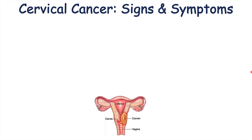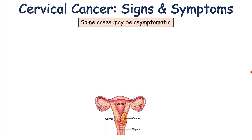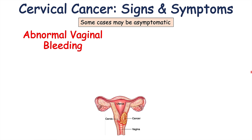Now let's talk about the signs and symptoms of cervical cancer. It's important to note that many cases are detected with screening methods like pap smear and colposcopy, so patients may have a very early stage of cervical cancer but be completely asymptomatic. However, if they do have signs and symptoms, the most important and often the first sign of cervical cancer is abnormal vaginal bleeding.